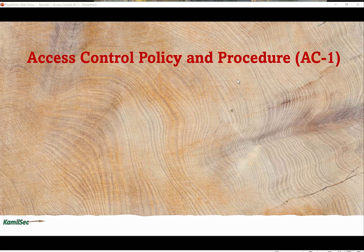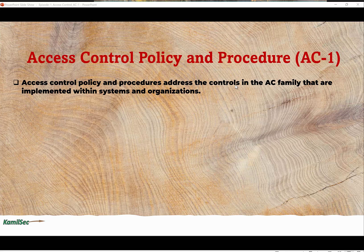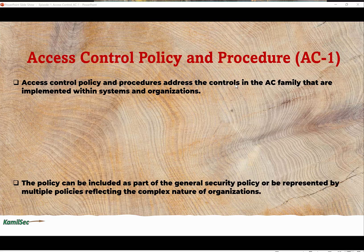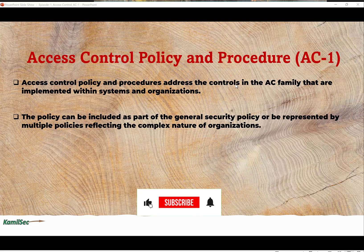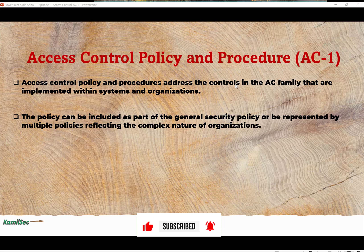Access Control Policy and Procedure, which is the first in the family, addresses the controls in the AC family that are implemented within systems and organizations. The policy can be included as part of the general security policy or represented by multiple policies reflecting the complex nature of the organization. If the organization is not large, they might have access control policy and procedure as a single document. But the more complex the organization, the more the access control policy and procedure will be spread across multiple organizational policies and procedures. Regardless, the access control policy and procedure is meant to address the AC controls within the organization.